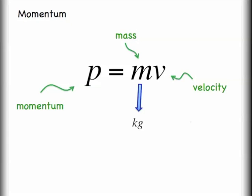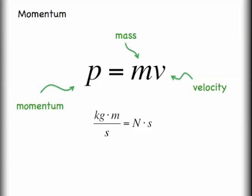Moving on, let's take a look at our units. We will continue to measure mass in kilograms, and we will stick with our velocity in meters per second. This gives rise to the units of momentum, which are kilogram meters per second. Sometimes you will also see people use newton seconds, a perfectly valid way to talk about momentum. You can recall that since a newton is a kilogram meter per second squared, when it's being multiplied by the second, it will give us the same units.